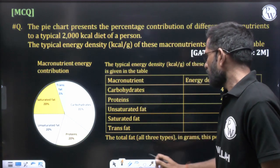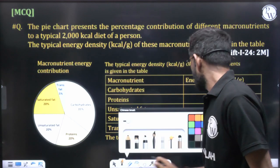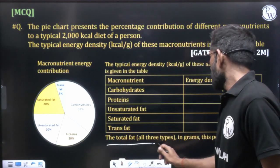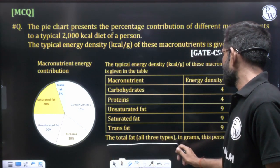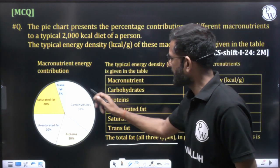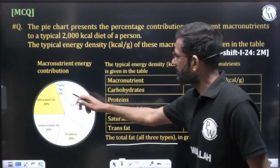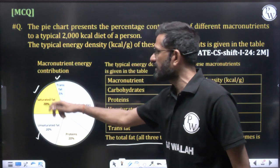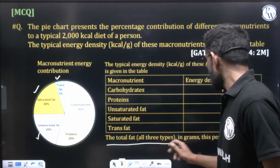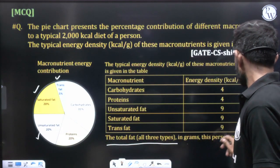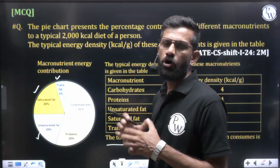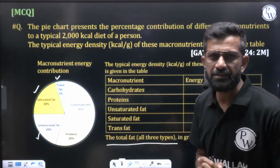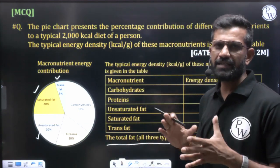Based on this data, the question asks: what is the total fat — all three types, that is trans fat, saturated fat, and unsaturated fat — in grams that this person consumes? So how much fat in grams does the person consume in total?